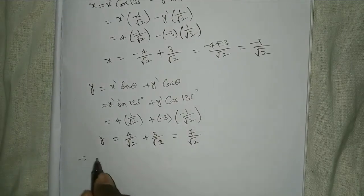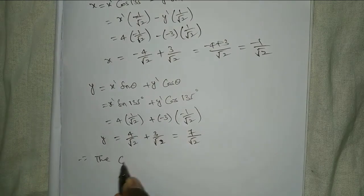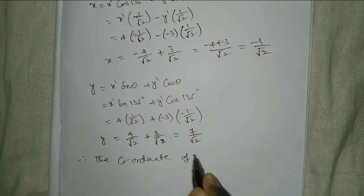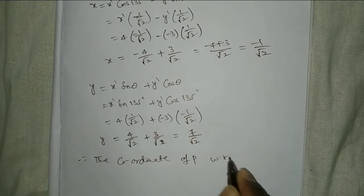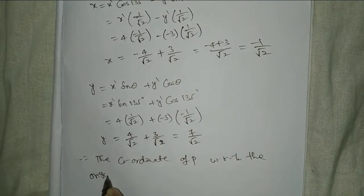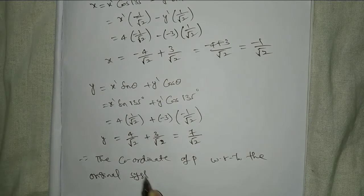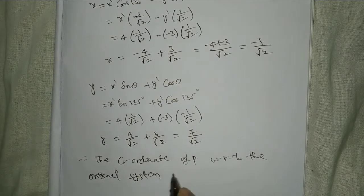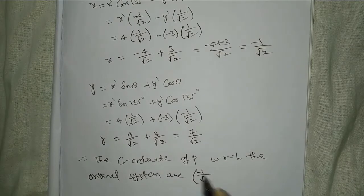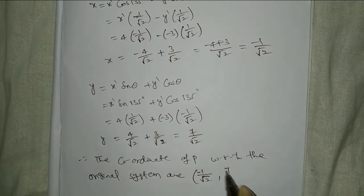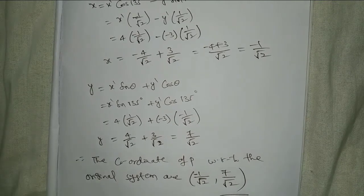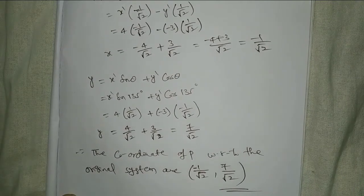Therefore, the coordinate of P with respect to the original system is minus 1 by root 2 comma 7 by root 2. Do you have any doubt? Please comment. Please subscribe my channel, like and share. Thank you.